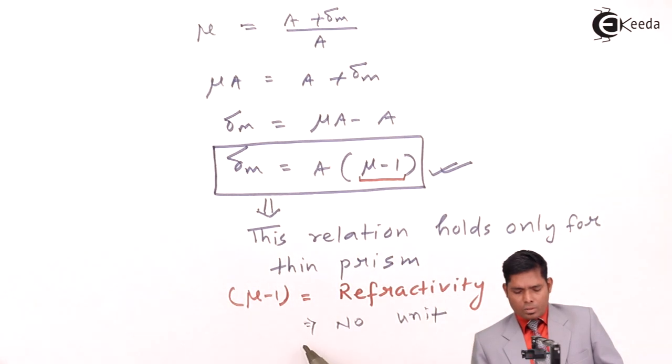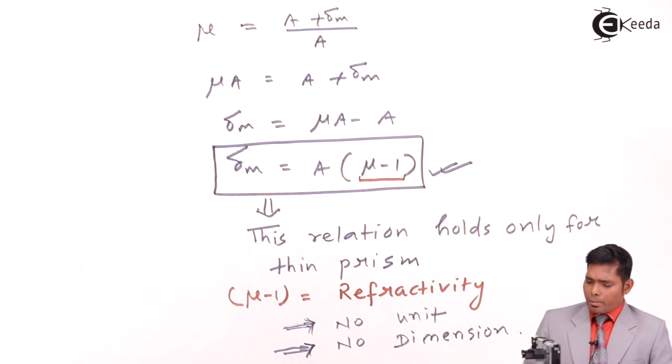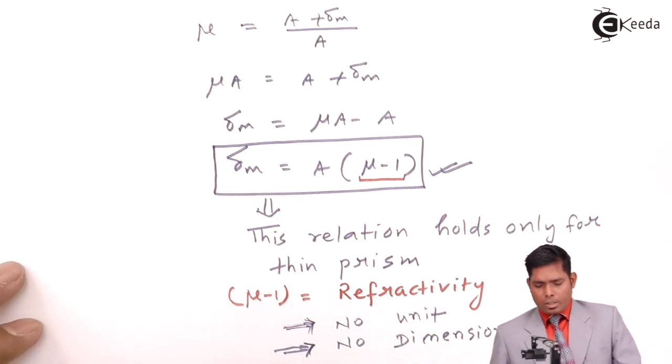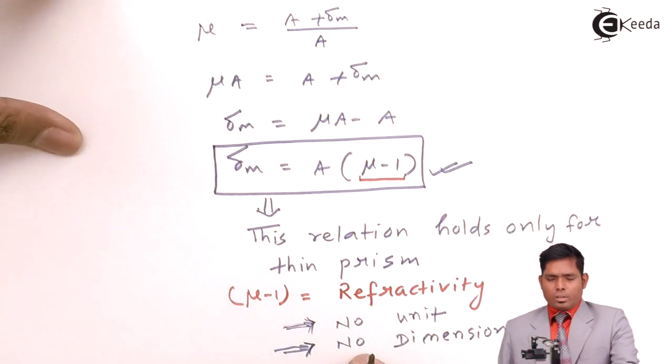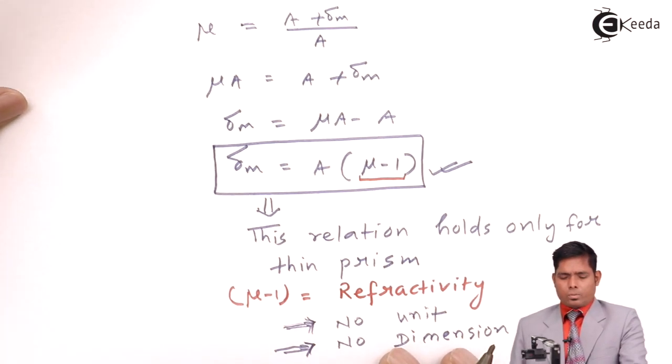No unit, no dimension. These are the points I'm writing. No dimension, so no unit, no dimension. This is the refractivity of the material of the prism. This formula is very useful. So this is the deviation through a thin prism. Thank you.